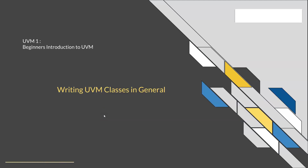In this session we are writing UVM classes in general. In the previous session you learned that there are two categories of classes in UVM: UVM component classes and UVM data classes. From now on you need to write your own classes deriving from the standard UVM classes to make your own UVM-based environment. In this session you will learn a generalized code for each of these categories.